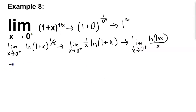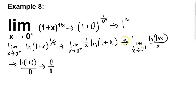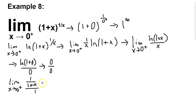Substituting 0 into ln of 1 plus x over x gives ln of 1 over 0, which is 0 over 0 — an indeterminate form we can use L'Hopital's Rule on. Taking derivatives: the derivative of ln of 1 plus x is 1 over 1 plus x (using chain rule, derivative of x plus 1 is 1), and the derivative of x is just 1. So we get 1 over 1 plus x, and substituting 0 gives 1 over 1, which evaluates to 1.